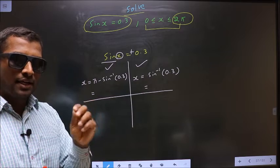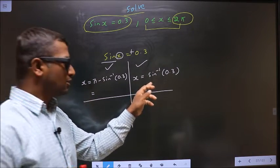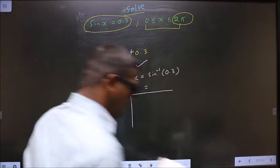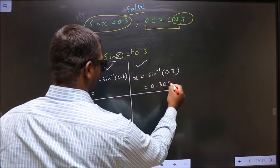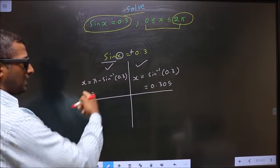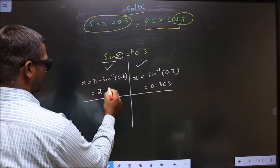Keep your calculator in radian mode and calculate. You should get this to be 0.305, and when you calculate this, you should get 2.84.